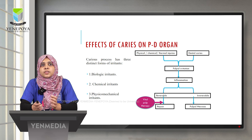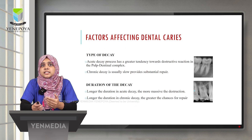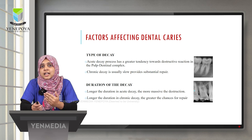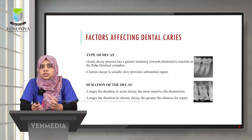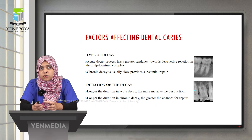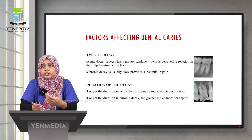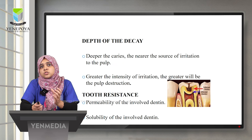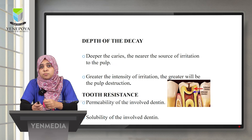Various factors affect dental caries progression. The type of decay matters: acute decay is more destructive while chronic decay is slow, allowing more chance of repair. The duration of decay is also important — longer chronic decay gives more time for repair, while prolonged acute decay causes more destruction. Depth of decay is also critical; if caries is very deep, the source of irritation is nearer to the pulp and can lead to pulp destruction.